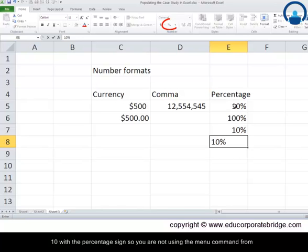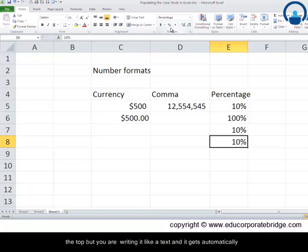The other way to write percentages: just type 10 with a percentage sign. So you're not using the menu command from the top, but you're writing it like a text, and it gets automatically by default visualized as 10%. So this is how you can take care of the number formats.